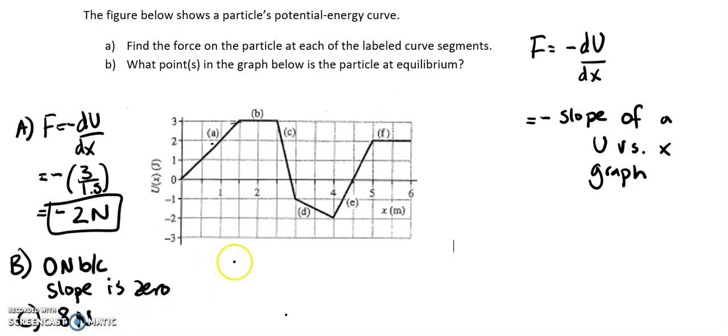I'll post my answers for D, E, and F. For D, I got 1 newton. For E, I got negative 4 newtons. And for F, I got zero newtons. You can go through it yourself and find the slope at each of the points.